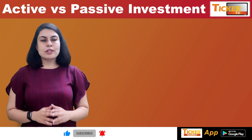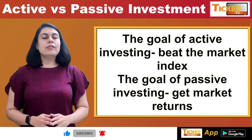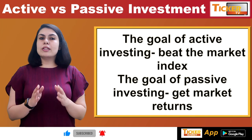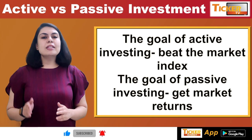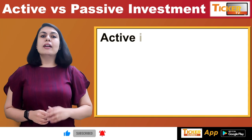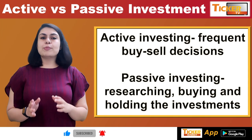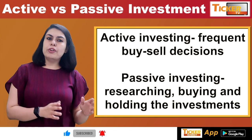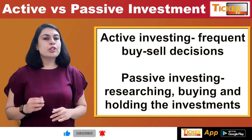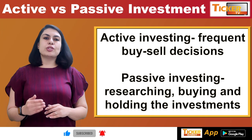Some of the key points are as follows. First, the goal of active investing is to beat the market index, whereas the goal of passive investing is to get the market returns. Second, active investing is a hands-on approach with frequent buy and sell decisions, making the most of information flow and price fluctuations.